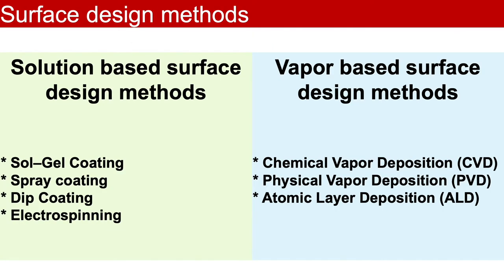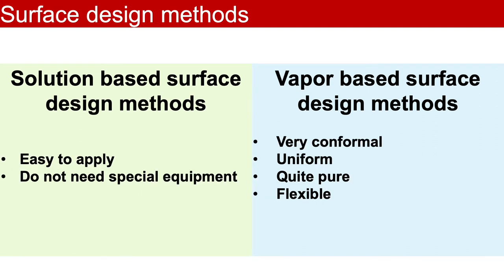Now let's move on to the surface design methods. Surface design can be carried out either based on solution-based processes or vapor-based processes. Some examples of solution-based surface design methods are sol-gel coating, spray coating, dip coating as well as electro-spinning techniques. While for vapor-based techniques, chemical vapor deposition, physical vapor deposition and atomic layer deposition are the most common ones. Solution-based methods are normally easier to apply and usually do not require any special equipment. Although vapor-based methods need special setup or equipment for surface modification, they in general could form very conformal, uniform, pure and flexible coating layers compared to solution-based methods.